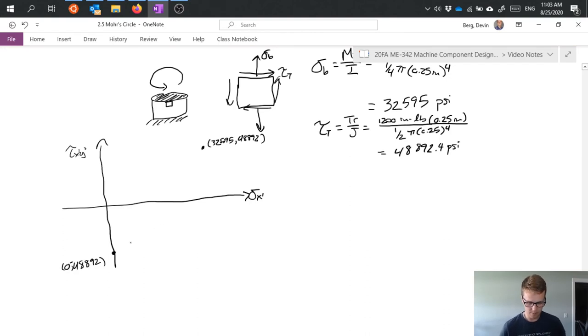And I get my two points. So I can go ahead and rough in my circle. I can't draw a circle to save my life. And I get something like this. Now if I use my calculations from before I could find my center here is going to be 16,297.5, and in this case I know that relatively easily because it's just going to be half of this 32,595 because my other normal stress is 0. So this plus 0 over 2.